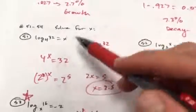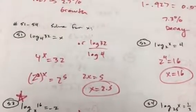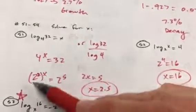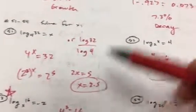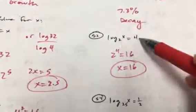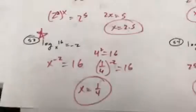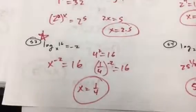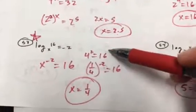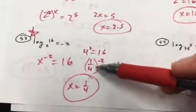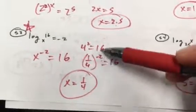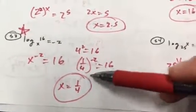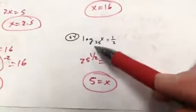You can either use the change-of-base formula, or ask: 4 to what power gives you 32? Get them both to base 2 and you get 2 and a half. For 2 to the fourth, x = 16. For x to the negative second equals 16 — that's more challenging. If 4² = 16 and you want a negative power, use the reciprocal: (1/4) to the negative second is 16, so x equals 1/4. And 25 to some power...